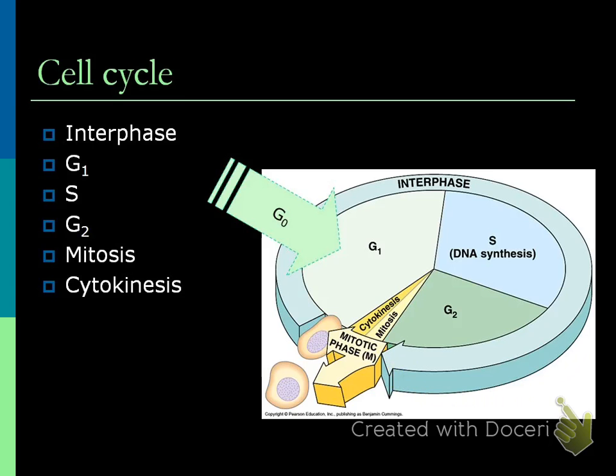This G0 phase is basically a homeostasis phase - it's just maintaining itself, not really growing. But the moment it goes into G1 phase, when it's getting ready to divide, G1 basically means the cell itself is growing. The cell is getting bigger, the cell membrane is stretching out, it might be increasing the amount of cytoplasm. But for the most part, the organelles are the same, the amount of DNA is the same - we're basically just moving into a bigger house.